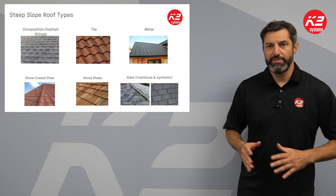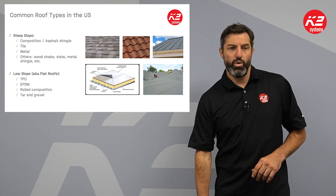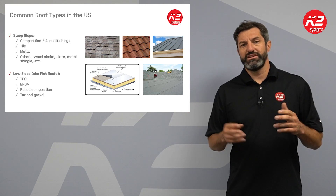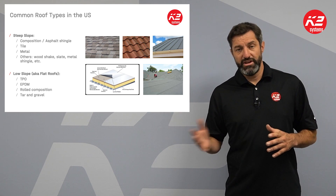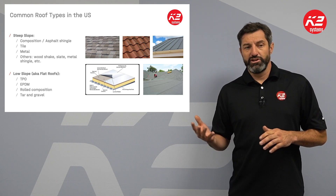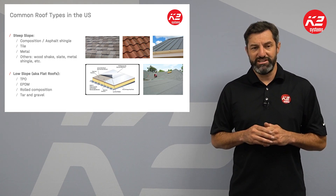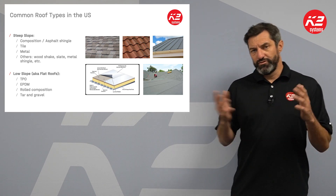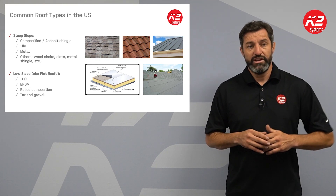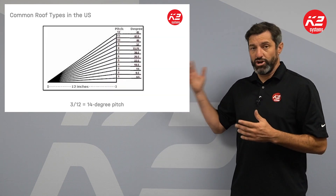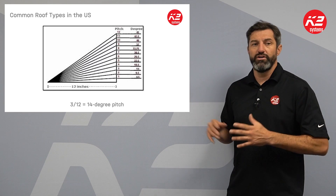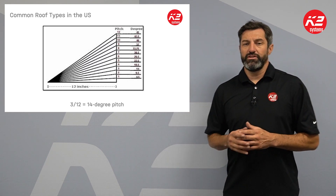We'll have more information on all those types, but today we're talking about comp shingle roofs. The roofing industry identifies roof types in two categories: steep slope and low slope. Steep slope covers common residential types like comp shingle, while low slope covers TPO, EPDM, and more commercial roof types. These are split by the manufacturer based on the degree and pitch of the roof — expressed as a fraction like 2/12 or 4/12, or in degrees like 15 or 18.